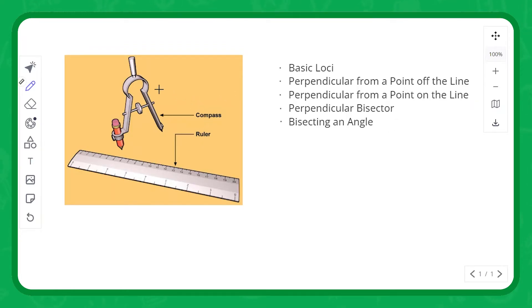These are all constructions that are done with compass and straight edge. It says ruler in this diagram, but it's always a straight edge. An actual ruler with measurements is not allowed.